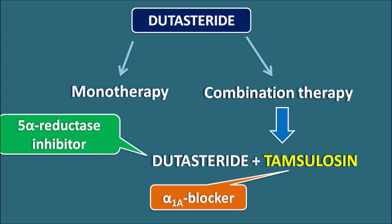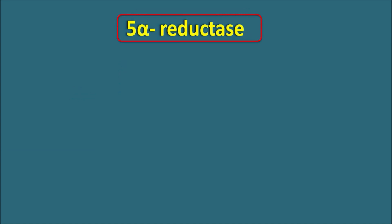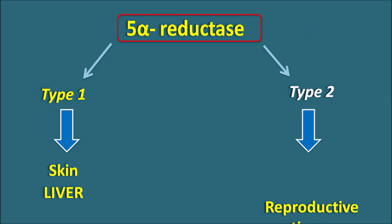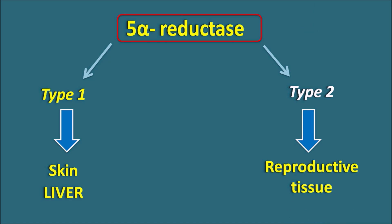The main action of dutasteride is 5-alpha reductase inhibition. This enzyme is present as two isomeric forms: type 1 and type 2 5-alpha reductase. Type 1 is mainly present in the skin and liver, responsible for the activation of androgens at these organs. Type 2 is mainly present on the reproductive tissue.